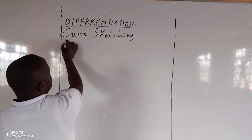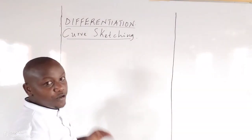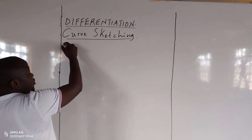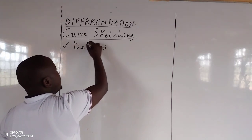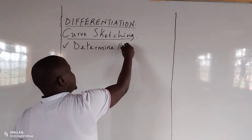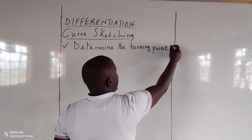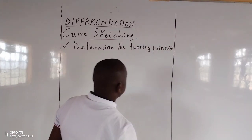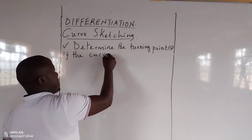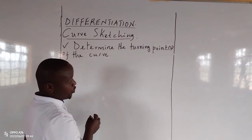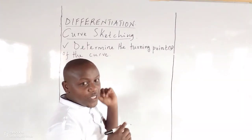For you to obtain a good sketch of a curve, there are steps you should follow. First of all, we should determine the turning points of the curve. What you should know is that at the turning points, the gradient of a curve is always zero.